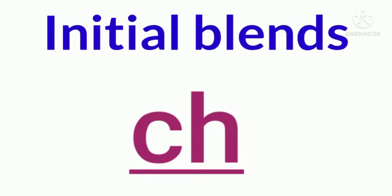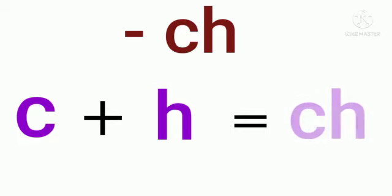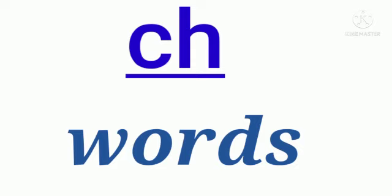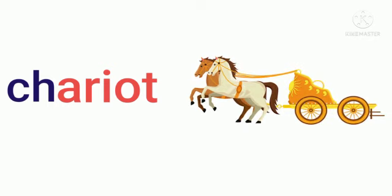Hello everyone, today we will learn initial consonant blends of CH. C and H together makes the CH sound. Let us practice initial consonant blends of words. Chariot — C H A R I O T — chariot.